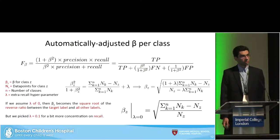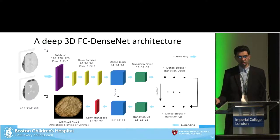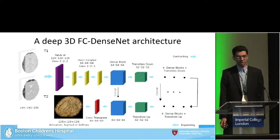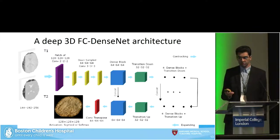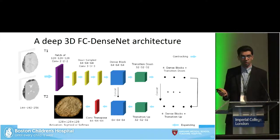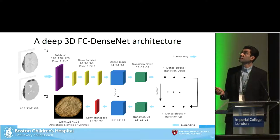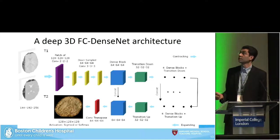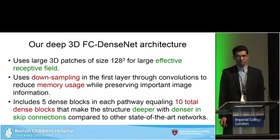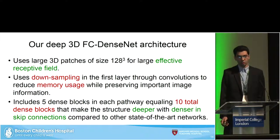We choose the beta values in the F-beta based on the class prevalence in the training dataset, and this is automatically calculated. This is the 3DFC DenseNet architecture. It takes large patches from images — all in 3D — with dense blocks and transition-down blocks, four or more dense blocks, then the expanding path as a reverse architecture with concatenation paths in between.